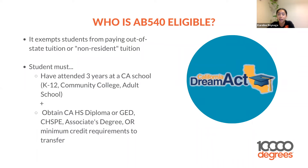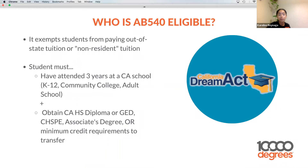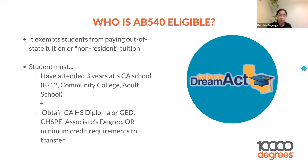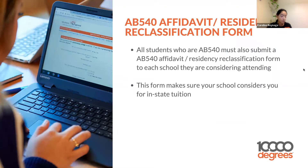What makes an AB 540 student? AB 540 status exempts students from paying out-of-state tuition. A student must have attended three years of California school — either K through 12th grade, a community college, or as an adult — and must have obtained a California high school diploma, GED, CHSPE, associate's degree, or a minimum credit requirement to transfer. All AB 540 students must also apply to the AB 540 affidavit and the residency classification form for each school they consider attending, to be considered for in-state tuition.